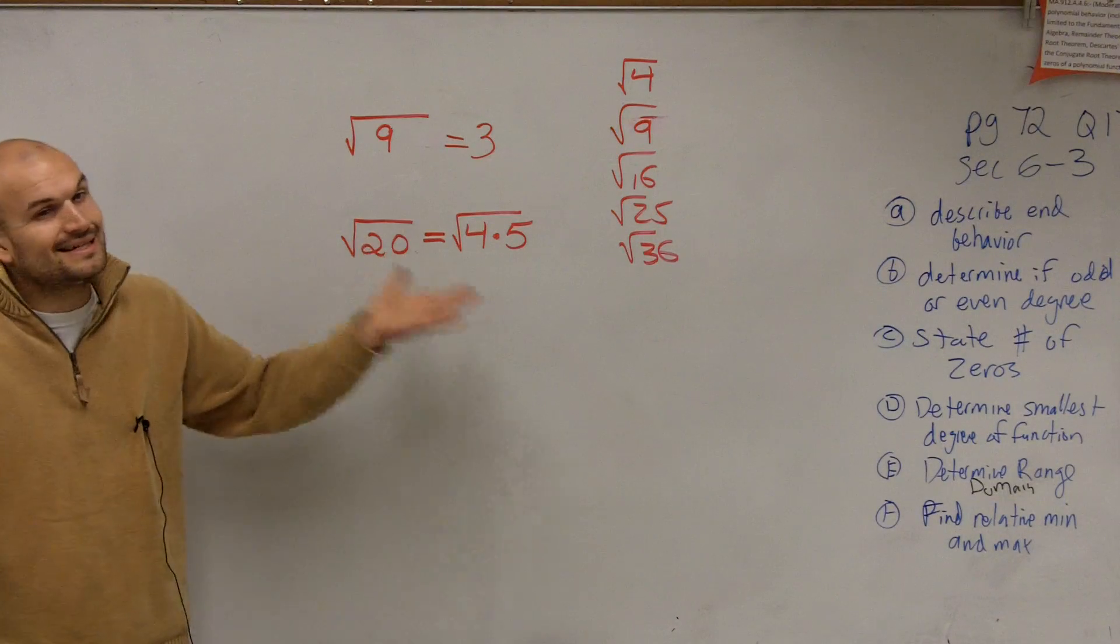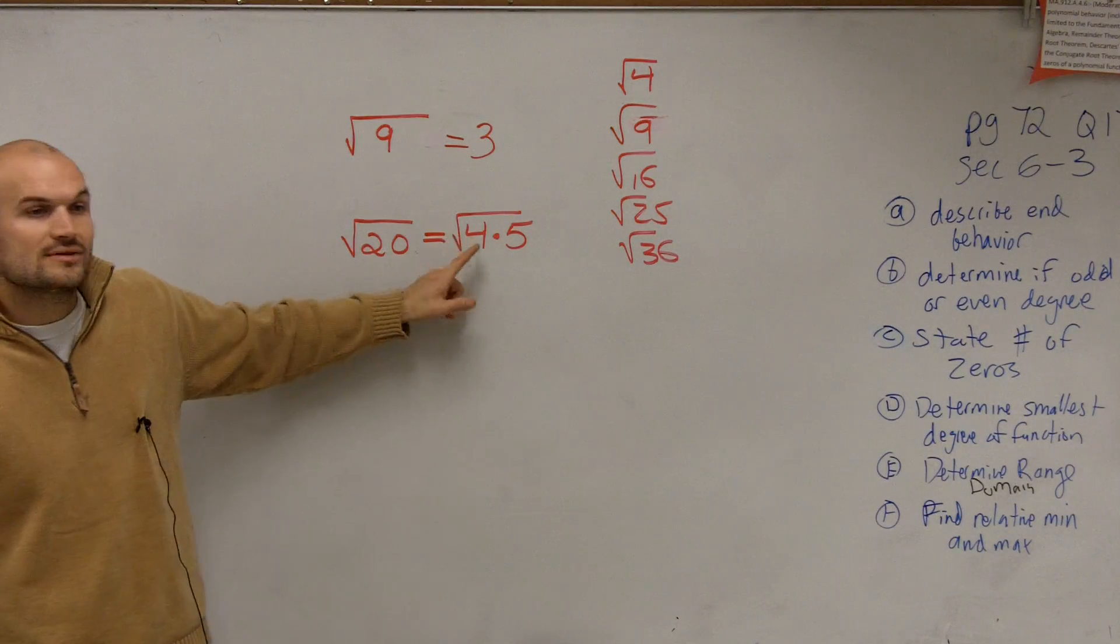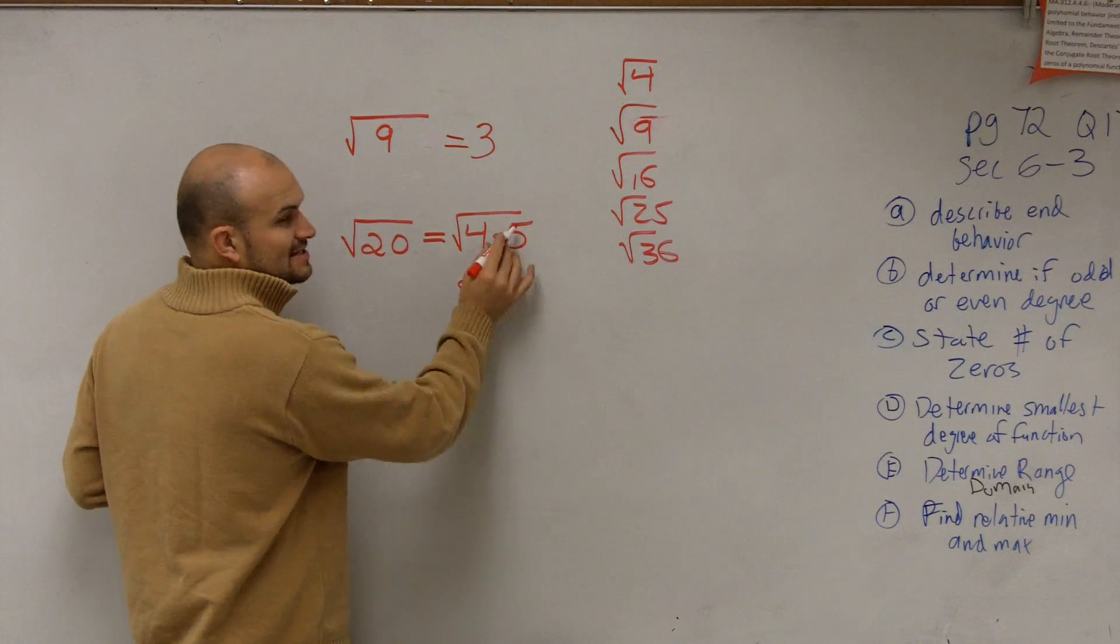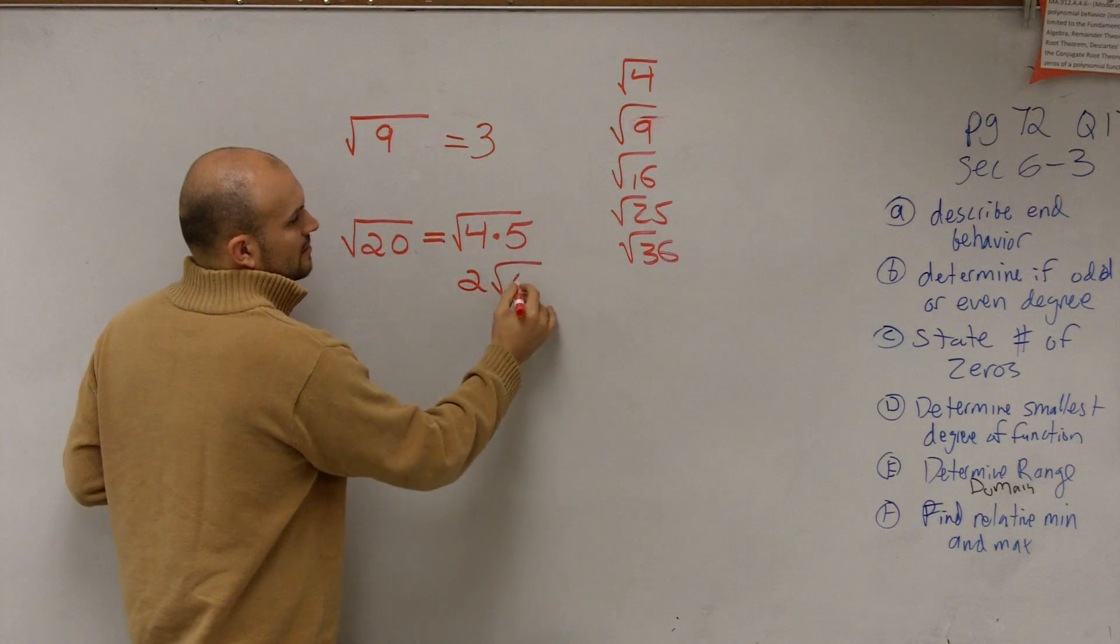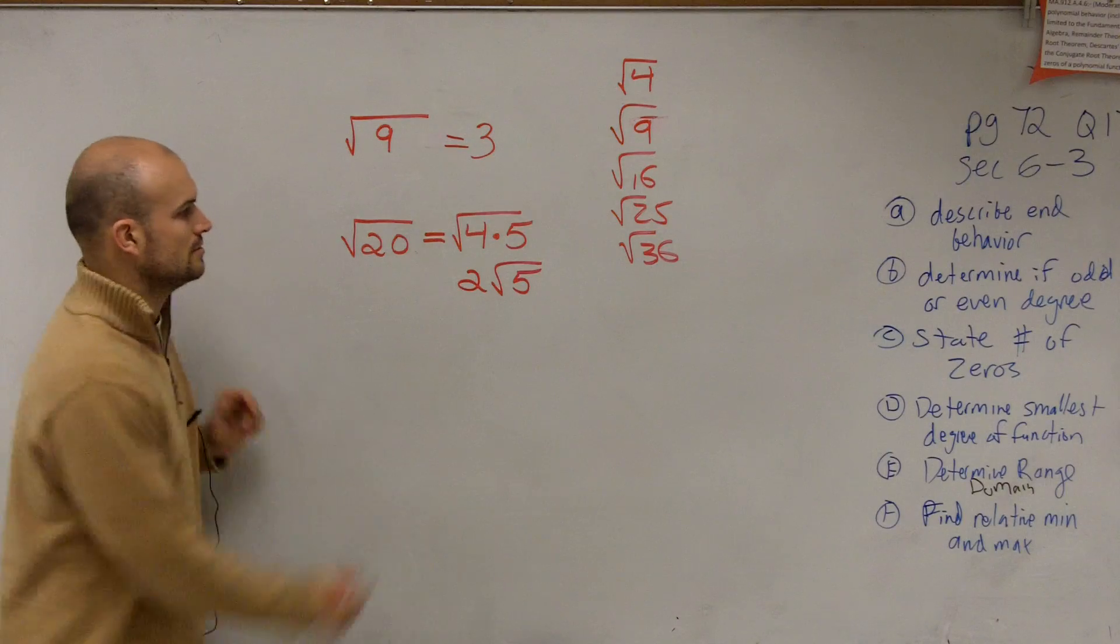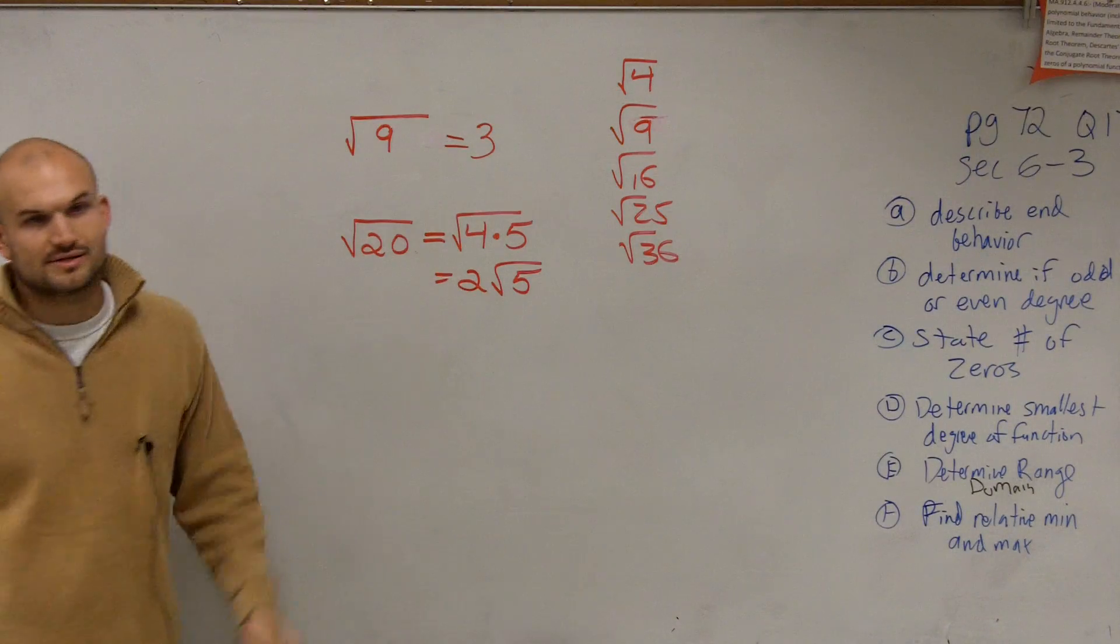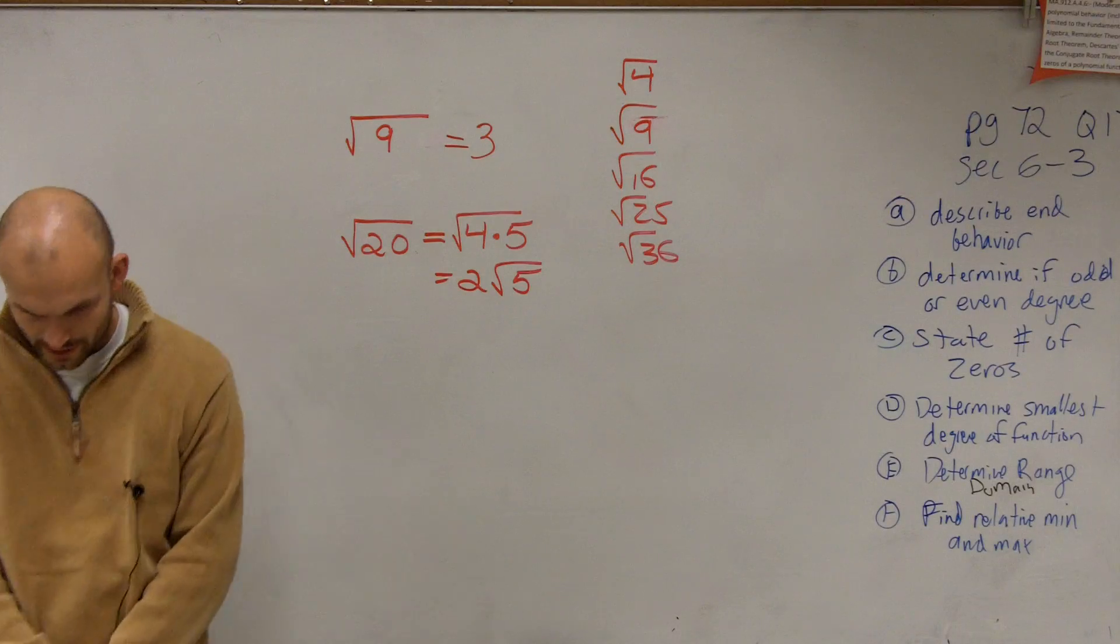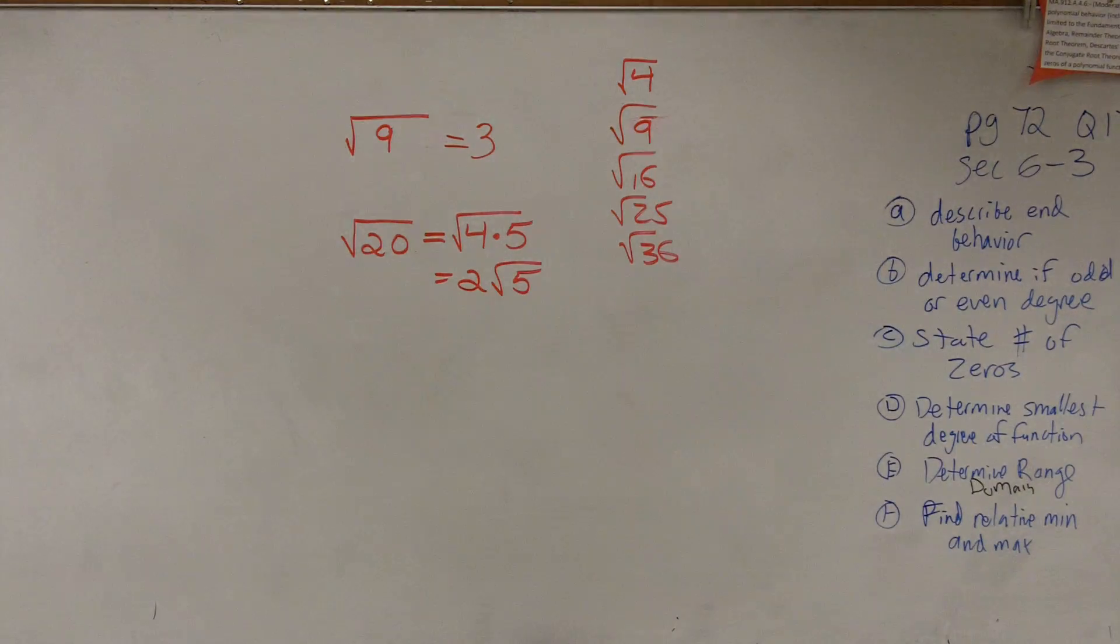Then what we want to do is, we can't get an exact answer, but I can now say I know what the square root of 4 is, which is 2. I still don't know what the square root of 5 is, so that's going to be my simplified answer. OK? There we go. So that's how we're going to practice simplifying.